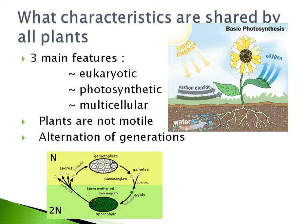Eukaryotic organisms not only include plants, but also fungi, animals, and protists. They have true nuclei that contain DNA, and they also have membrane-bound organelles.